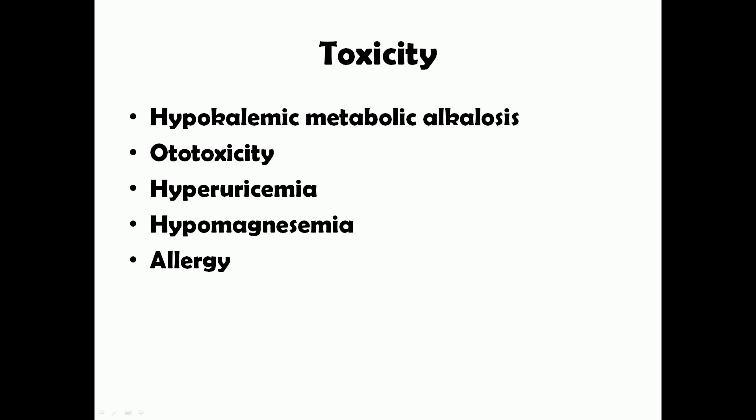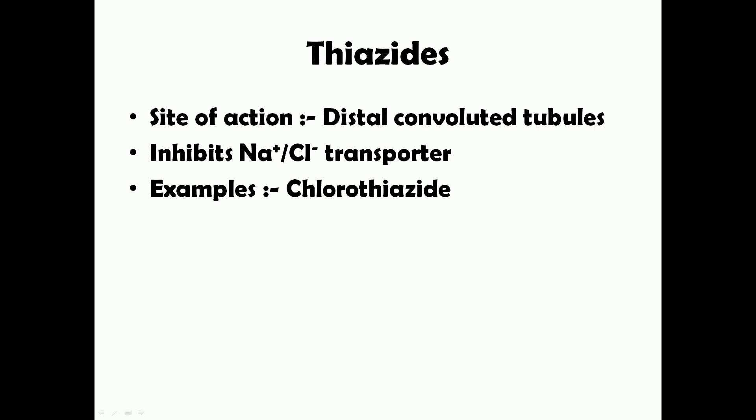Loop diuretics are a group of drugs that can cause ototoxicity — this is a very common exam question. Other known ototoxic drugs are aminoglycoside antibiotics. Additional toxic effects include hyperuricemia, due to impaired excretion of uric acid causing accumulation in the blood; hypomagnesemia, as magnesium gets excreted in excess; and as usual, allergy.